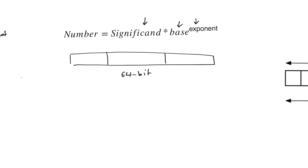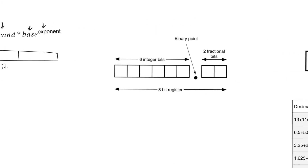The first step is to understand how fixed point numbers work. In a floating point register, the position of the binary point is floating — it is determined by the exponent and can move to represent huge or very small numbers. In a fixed point register, the position of the binary point is fixed, so the fractional part and the integer part are of fixed length. The range of numbers representable using a fixed point register is usually much smaller than a floating point register of corresponding length, but adders made for fixed point numbers are more efficient.